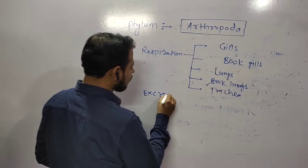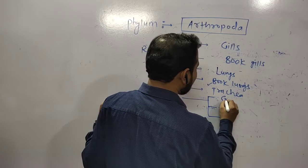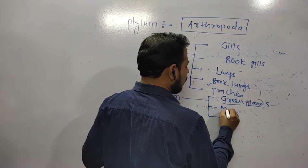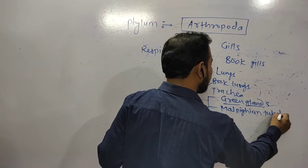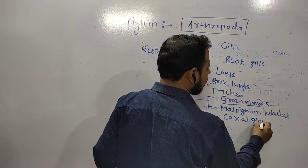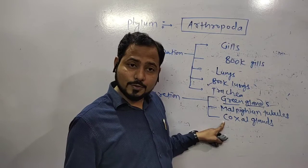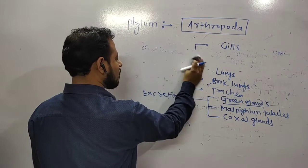Let's talk about excretion. Excretion occurs by what excretory structures? They show presence of green glands for excretion purpose. Similarly they show presence of Malpighian tubules for excretion. Malpighian tubules will be there and coxal glands you will also see. Multiple choice questions will have respiratory structures and excretory structures in arthropods.